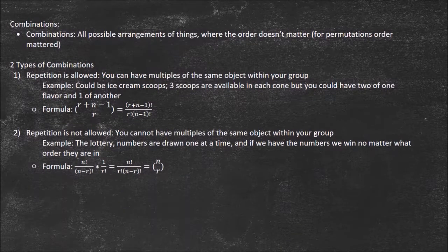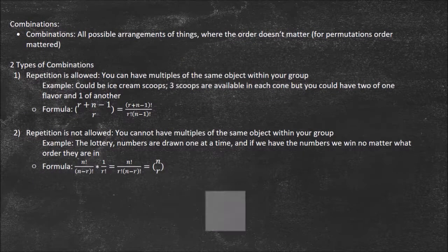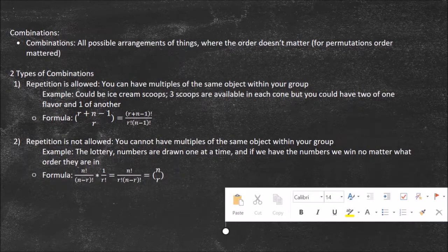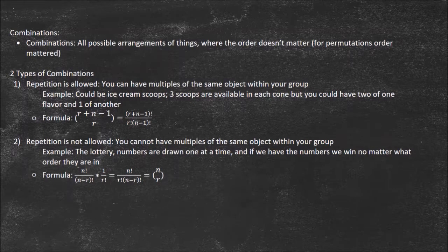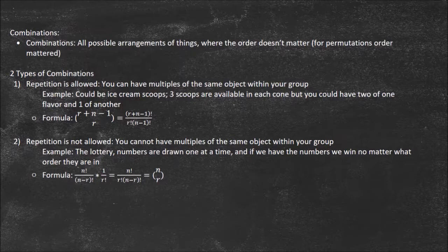Now we'll touch on combinations. This is where order doesn't matter because we're just figuring out how many groups we can get. With repetition allowed, you can have multiples of the same object within your group. This would be like ice cream cones, where you could have two of one flavor and one of another. The formula for that is r plus n minus one, choose r.